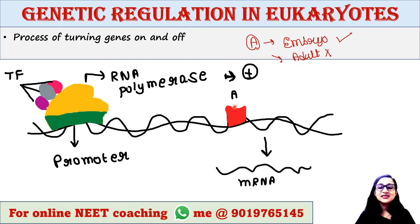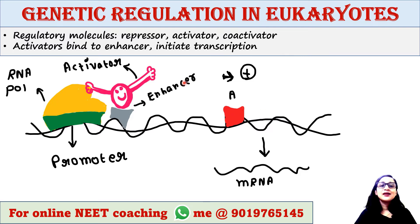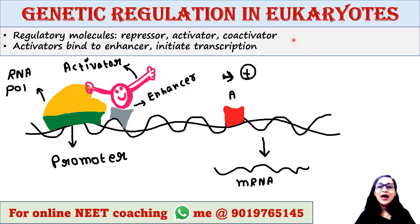Here we have the DNA where gene A is under the control of this promoter. When RNA polymerase and some transcription factors bind to this promoter, gene A is expressed — that means this gene is on. Gene regulation is almost the same in prokaryotes and eukaryotes. In eukaryotic cells, there are three types of regulatory molecules that can affect the expression of genes.